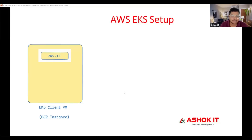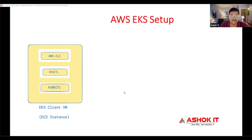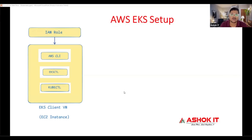First, create one EC2 instance, then install AWS CLI software on that machine, then install eksctl software, then install kubectl software. I will tell you what is the purpose of these three softwares. Once these three softwares are installed, we need to create one IAM role and attach that IAM role with this EKS client machine.